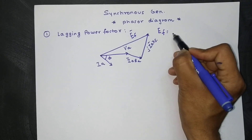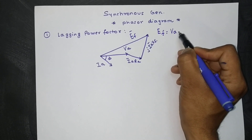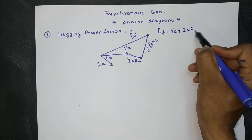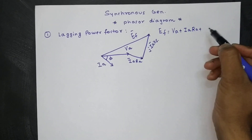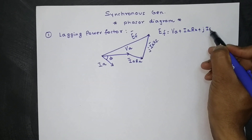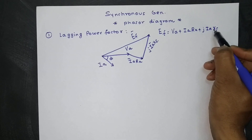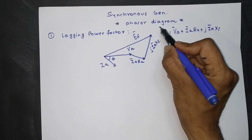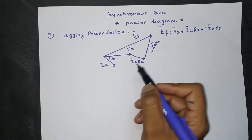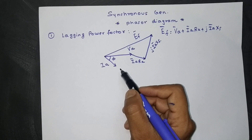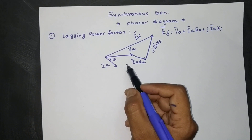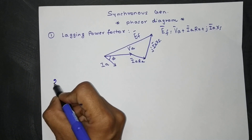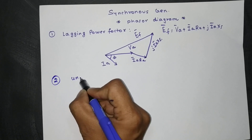The resultant is the excitation voltage, also called EF. We can write the expression: EF = VA + IA·RA + j·IA·Xs. This is how we draw the phasor diagram of a synchronous generator at lagging power factor.